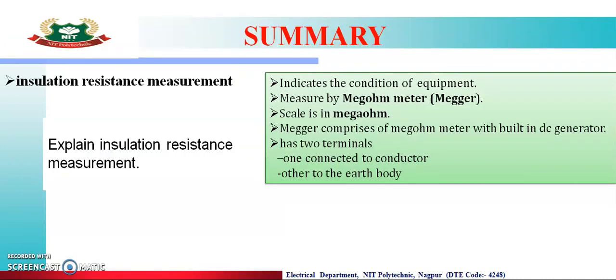Let us summarize briefly. Insulation resistance measurement is performed to determine whether our equipment is in good condition or not. Insulation resistance is measured using a megohm meter, which is also called a megger. The scale of the megger is in megaohms.